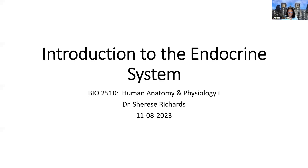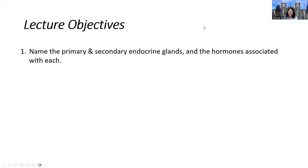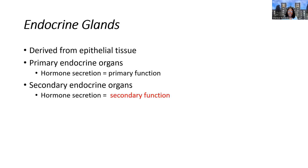Let's begin the introduction to the endocrine system and look at our learning objectives. The first one is to name the primary and secondary organs, endocrine glands, and the hormones associated with each.